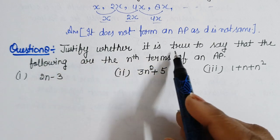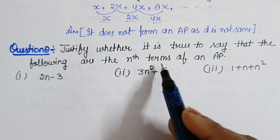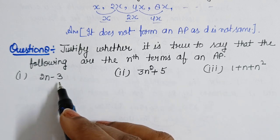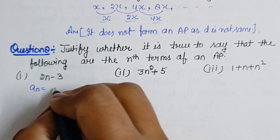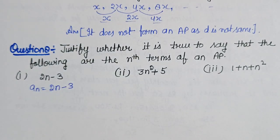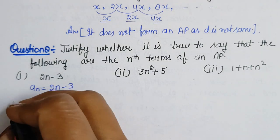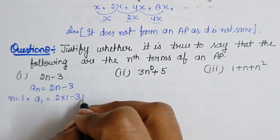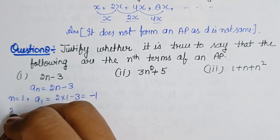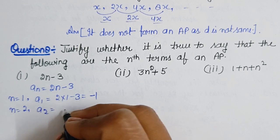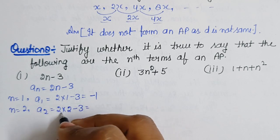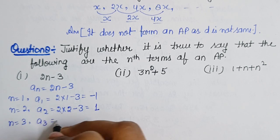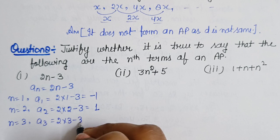Now question 8: justify whether it is true to say that the following are the nth terms of an AP. Here we have to check whether a given nth term expression can represent an AP. For the first case, we have a_n = 2n − 3. We substitute values: if n = 1, a1 = 2(1) − 3 = −1; if n = 2, a2 = 2(2) − 3 = 1.